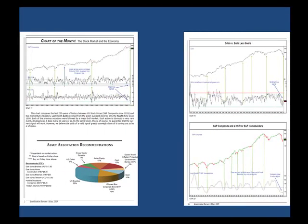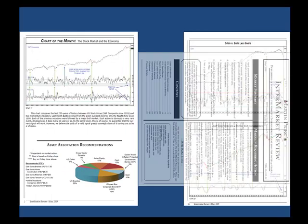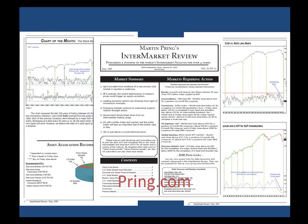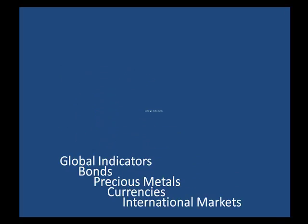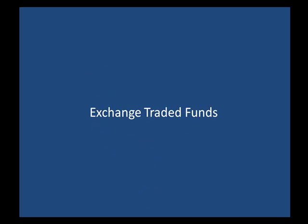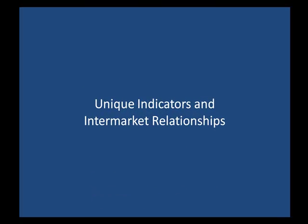If you enjoyed this chart of the month, you may want to go to Pring.com and download a free sample of our Intermarket Review — a monthly roundup of the world's principal financial markets with a special emphasis on the U.S. We also look at global indicators, bonds, precious metals, currencies, and international markets, using ETFs to execute our strategies as much as possible. You'll find unique indicators and intermarket relationships you cannot find anywhere else.